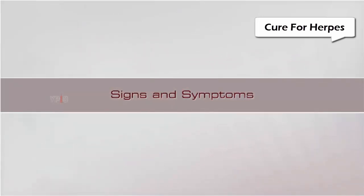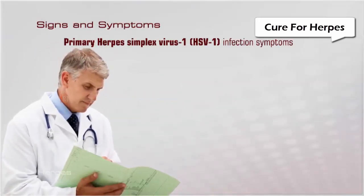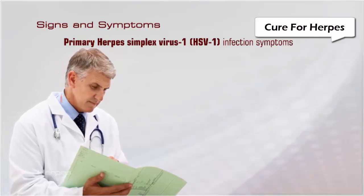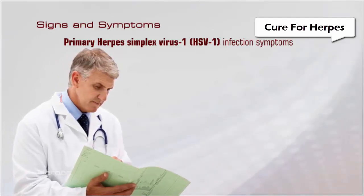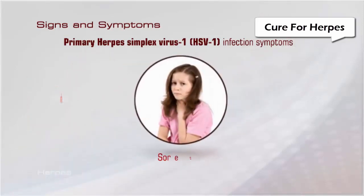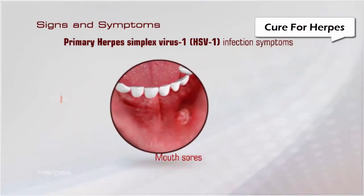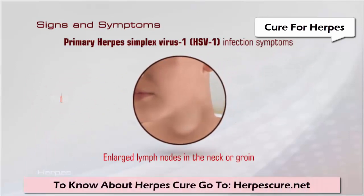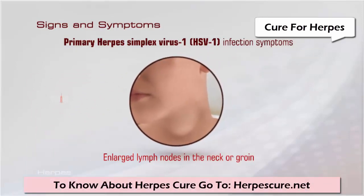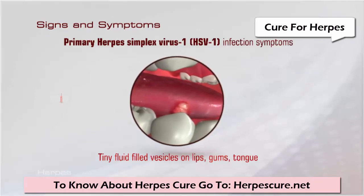Signs and symptoms: Primary herpes simplex virus infection often occurs in children, and the symptoms include fever, sore throat, mouth sores, and enlarged lymph nodes in the neck or groin. Tiny vesicles filled with fluid form on the lips, the gums, and the roof of the mouth or tongue. These lesions may ulcerate and heal within two to three weeks.